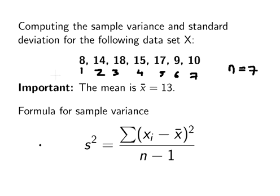Now importantly in the calculation we're going to be told that the mean is 13. So that's something to make note of. This is the formula for sample variance. We're going to look at sample variance first.